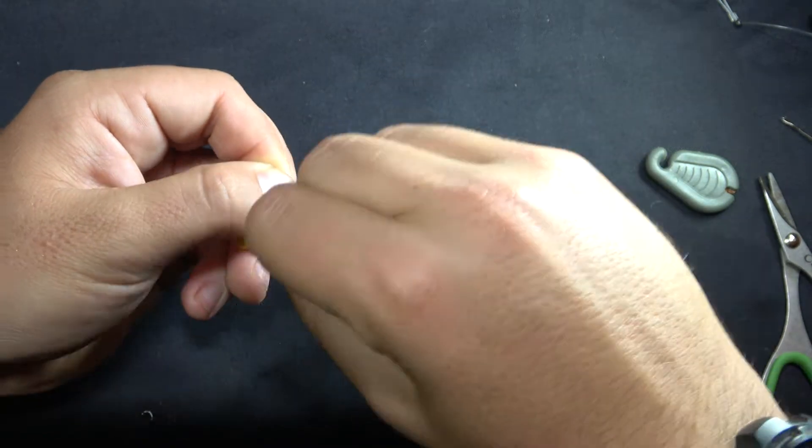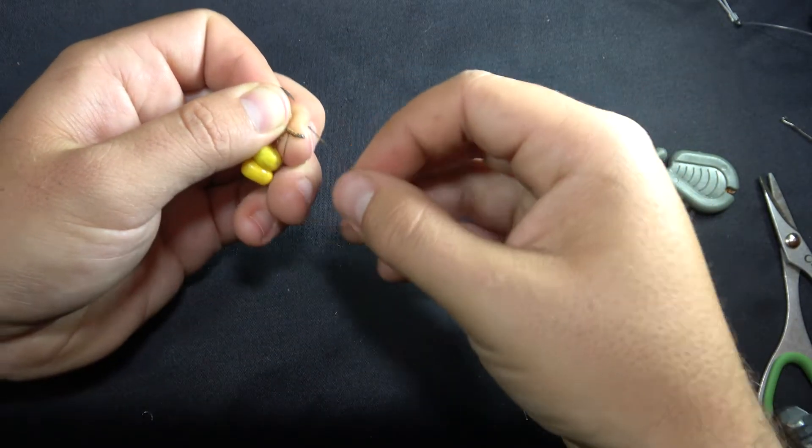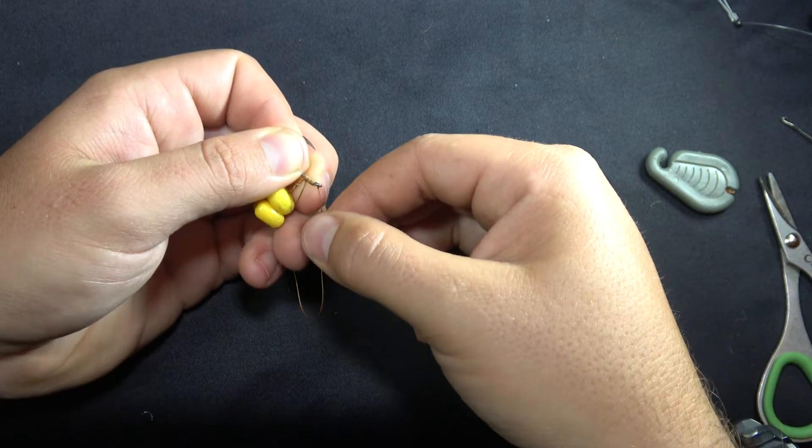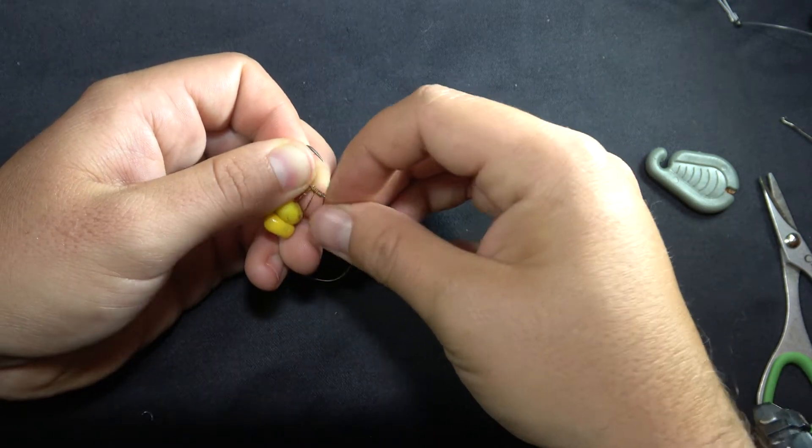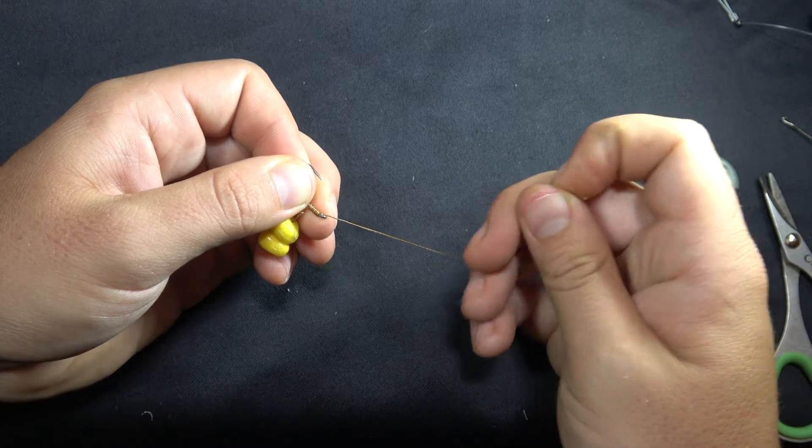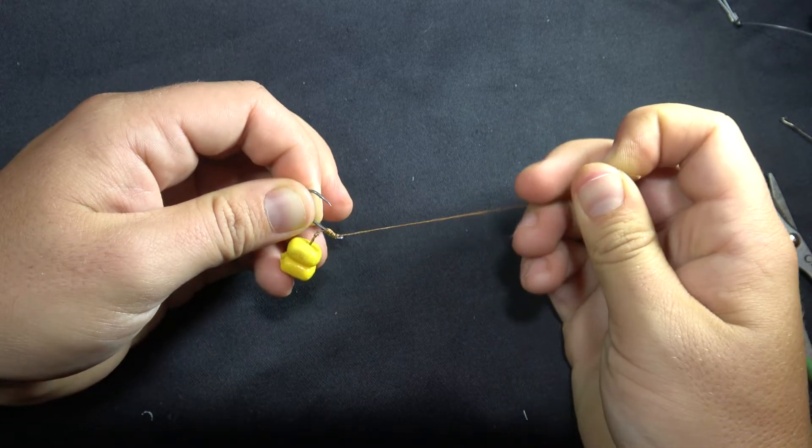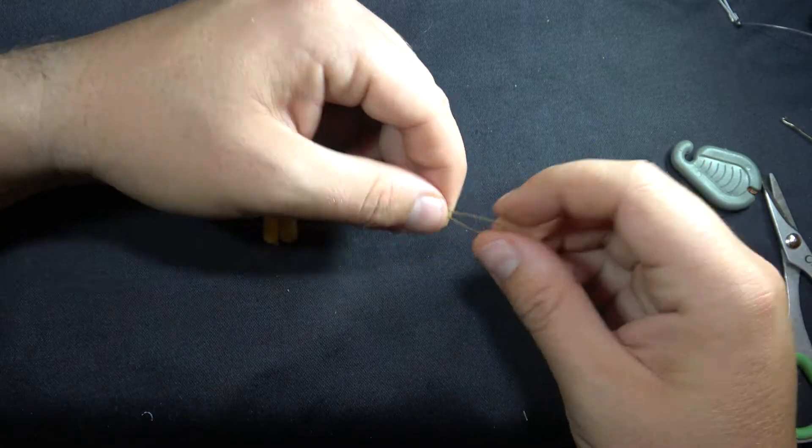Now tie your knotless knot. After doing your loops, make sure to thread your braid through the eye from the back of the hook to the front of the hook. This is very important because if it's done the other way around, you're less likely to catch fish.